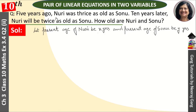5 years ago, Nuri's age was X minus 5, and Sonu's age was Y minus 5. For example, if your present age is 15 and someone asks how old you were 5 years ago, you subtract 5 to get 10. That is exactly what we are doing here.